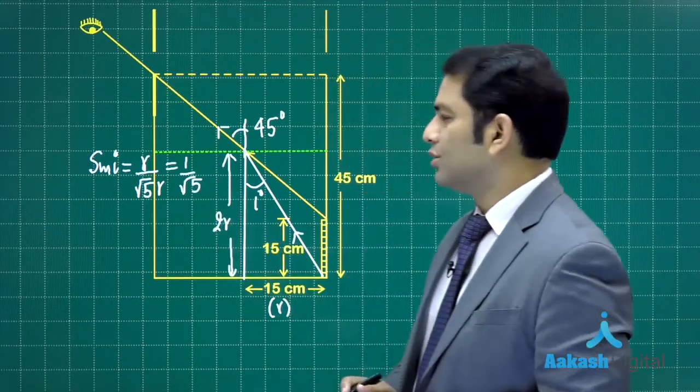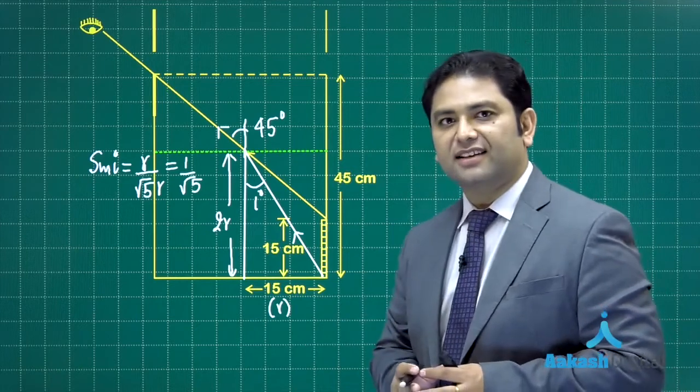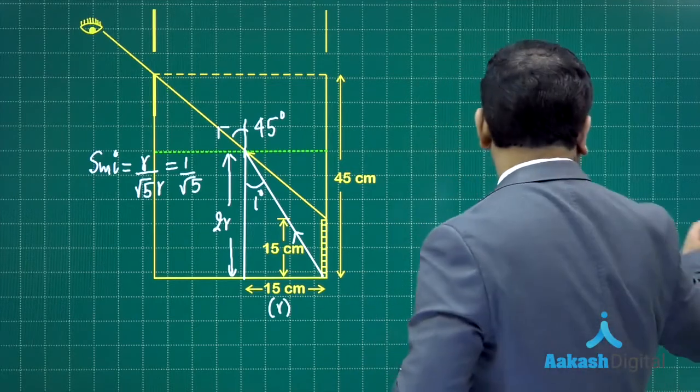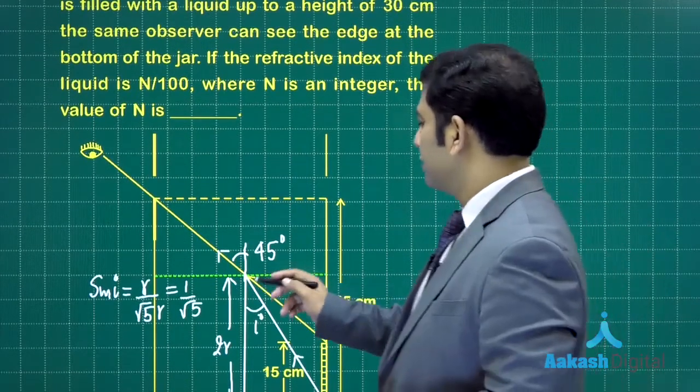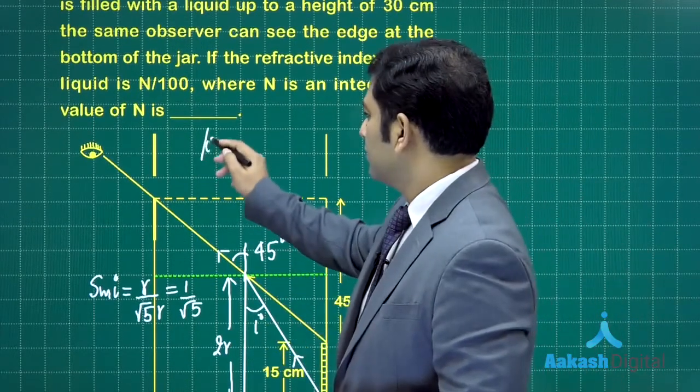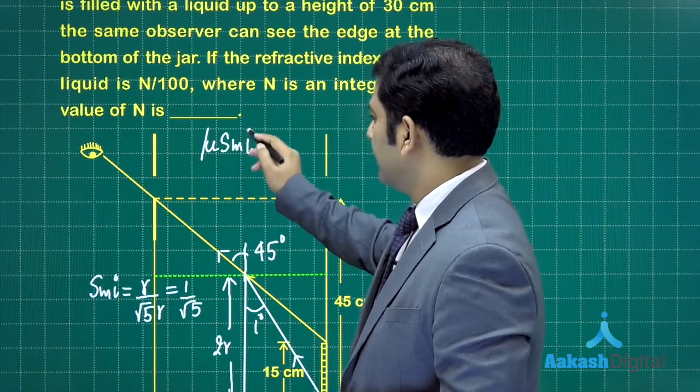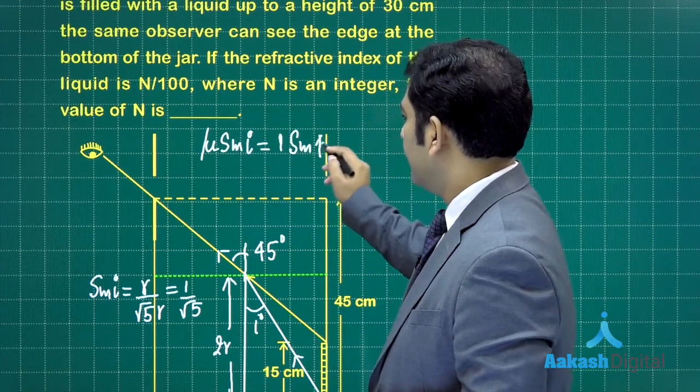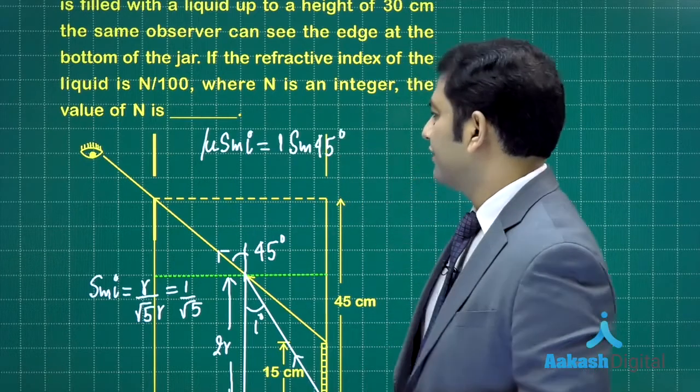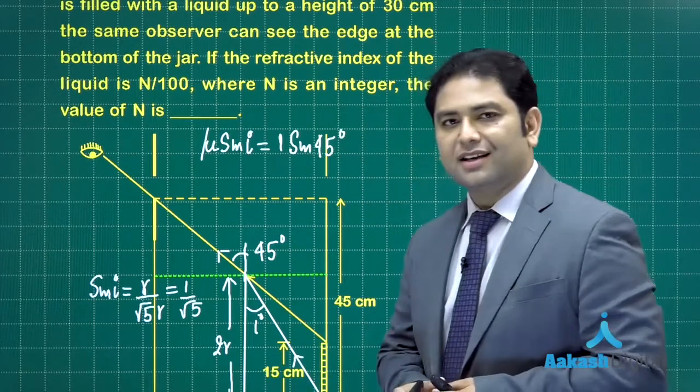All done, the value of sine i has been calculated. Now we need to see Snell's law. If you do that right here, you would be getting μ sine i is going to equal 1 sine r, and r is of course 45 degrees.